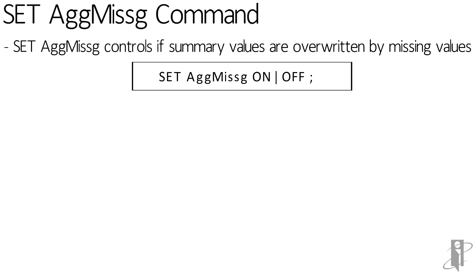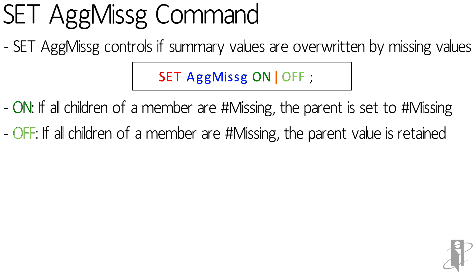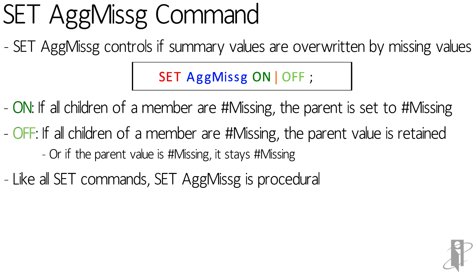If you want to turn it on, you can say setAggMissing on. If you want to turn it off, you can say setAggMissing off. If it's set to on and it sees that all the children of a current member are #MISSING, it will overwrite the parent value with #MISSING. But if the parent value actually has a number and all the children are missing, setAggMissing off will leave that parent value there. It is a procedural command like all set commands, meaning you can turn it on and off as needed during the script.